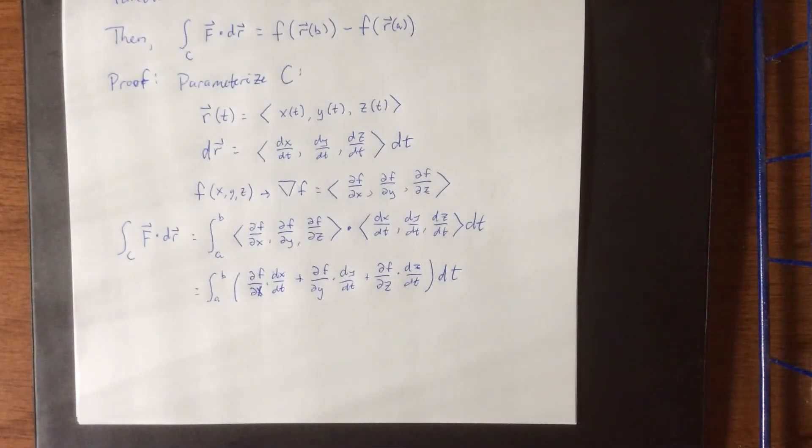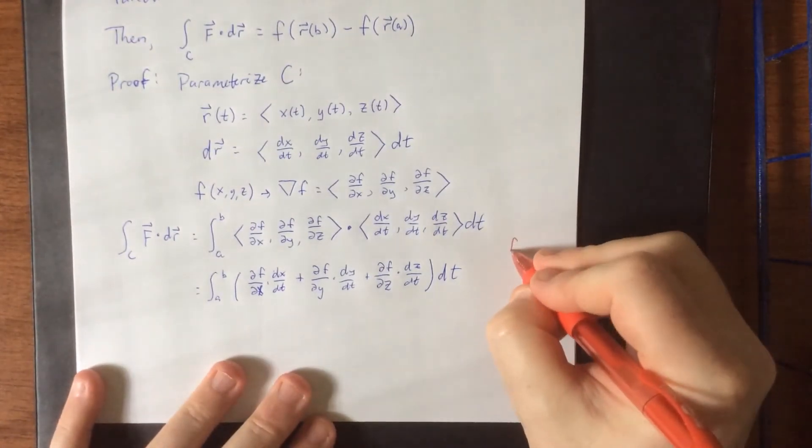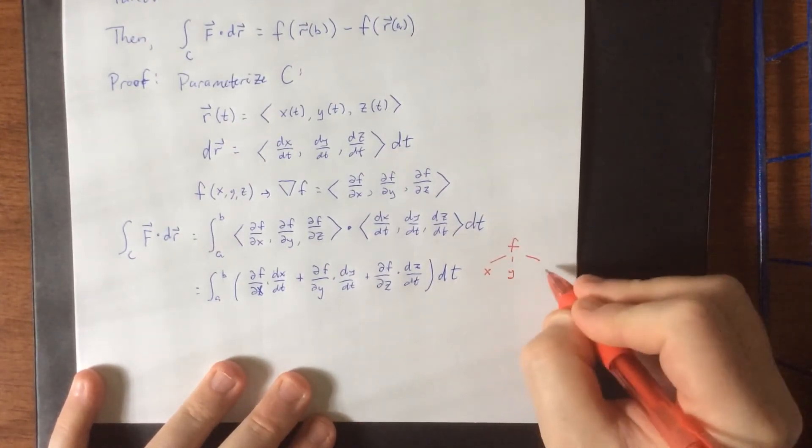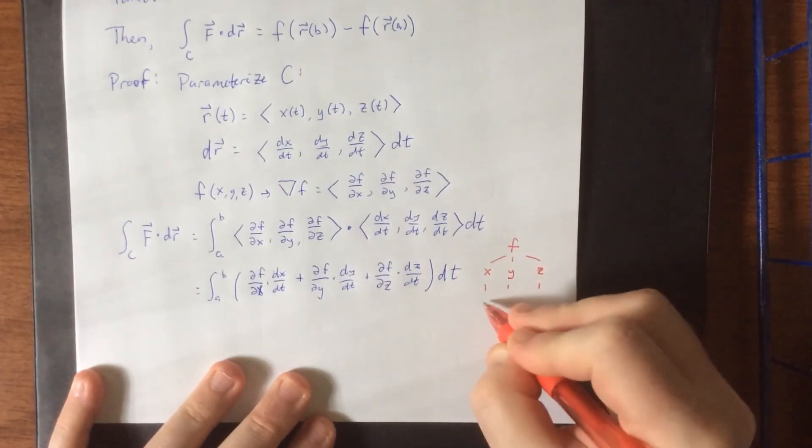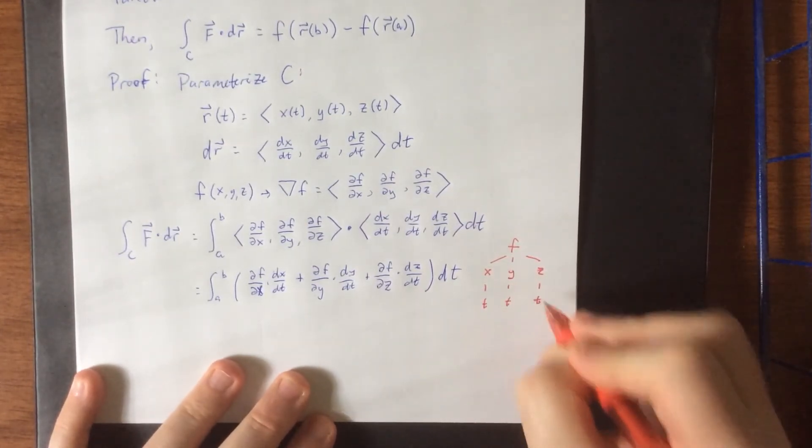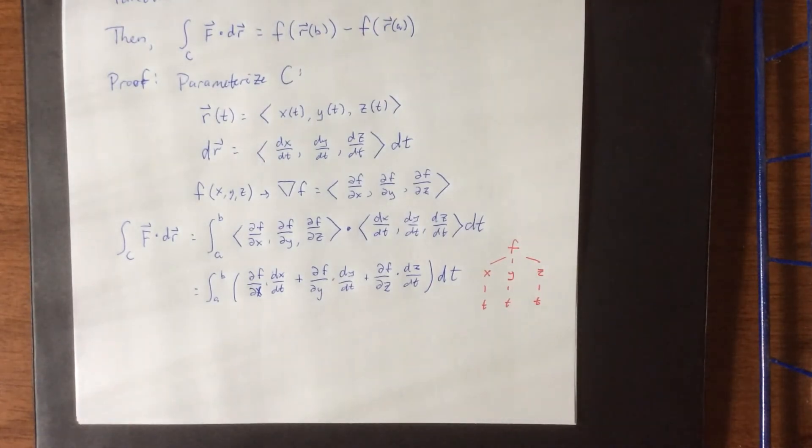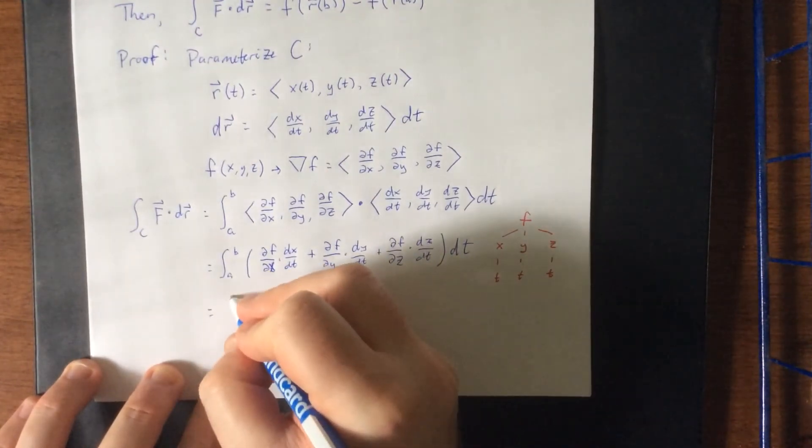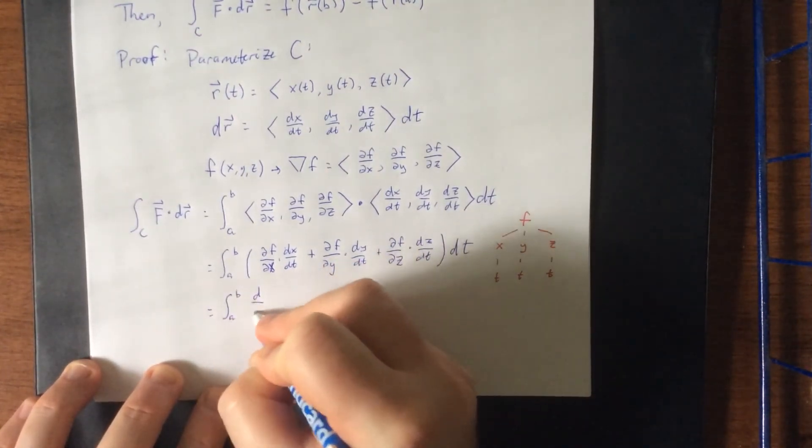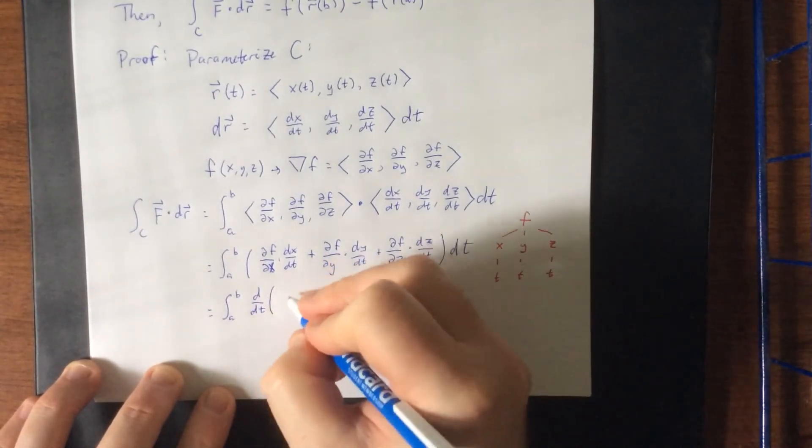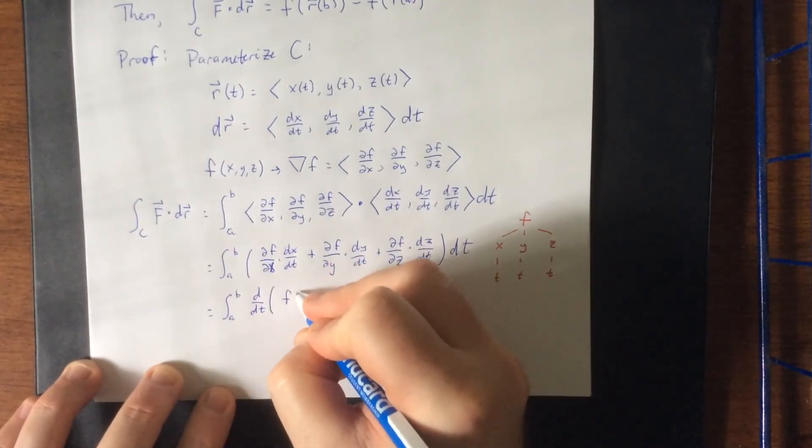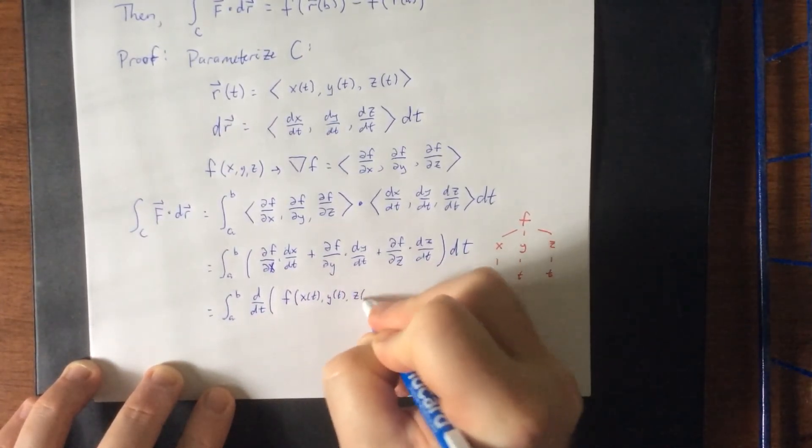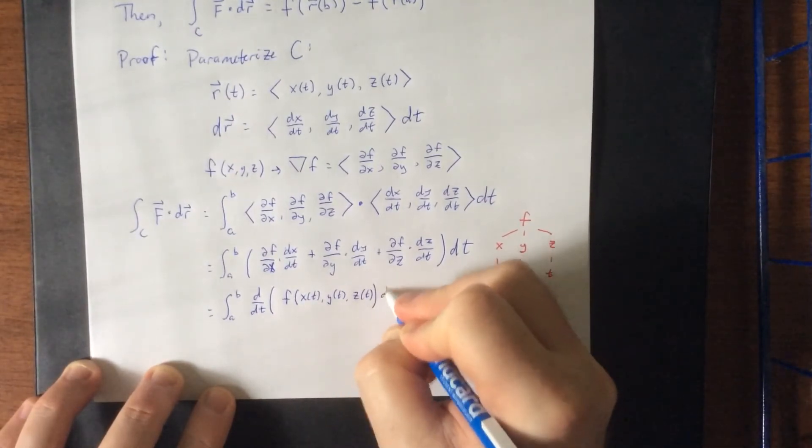Now, the thing that I'd like to point out that we have here looks precisely like the following. This is F being expressed as a function of X, Y, and Z, and then X, Y, and Z all being expressed as functions of T. What you're looking at is exactly the chain rule. This would be the definite integral from A to B of the derivative with respect to T of F of X of T, Y of T, Z of T, DT.